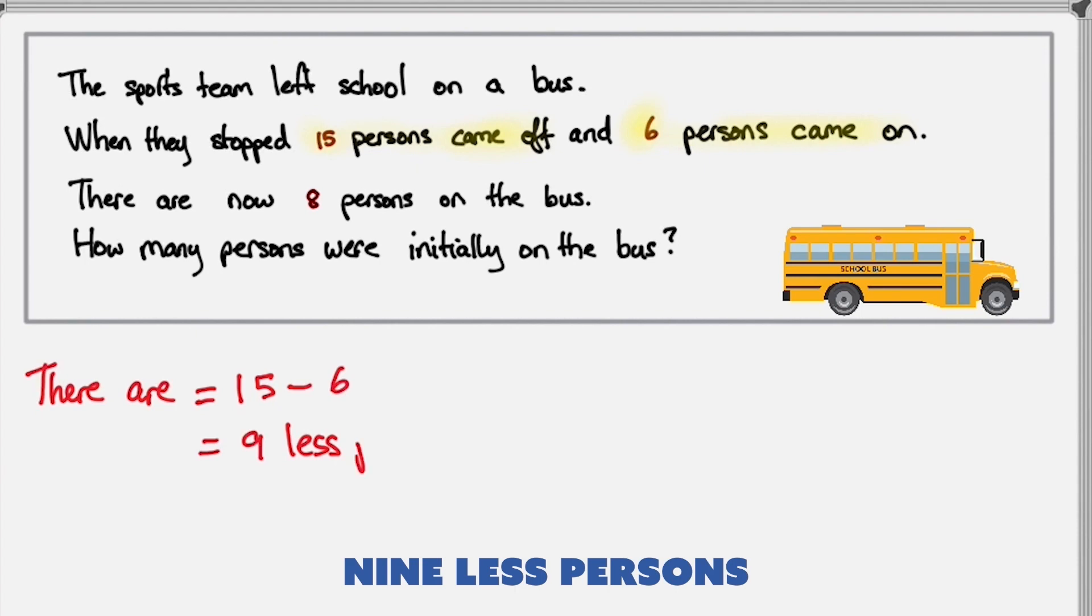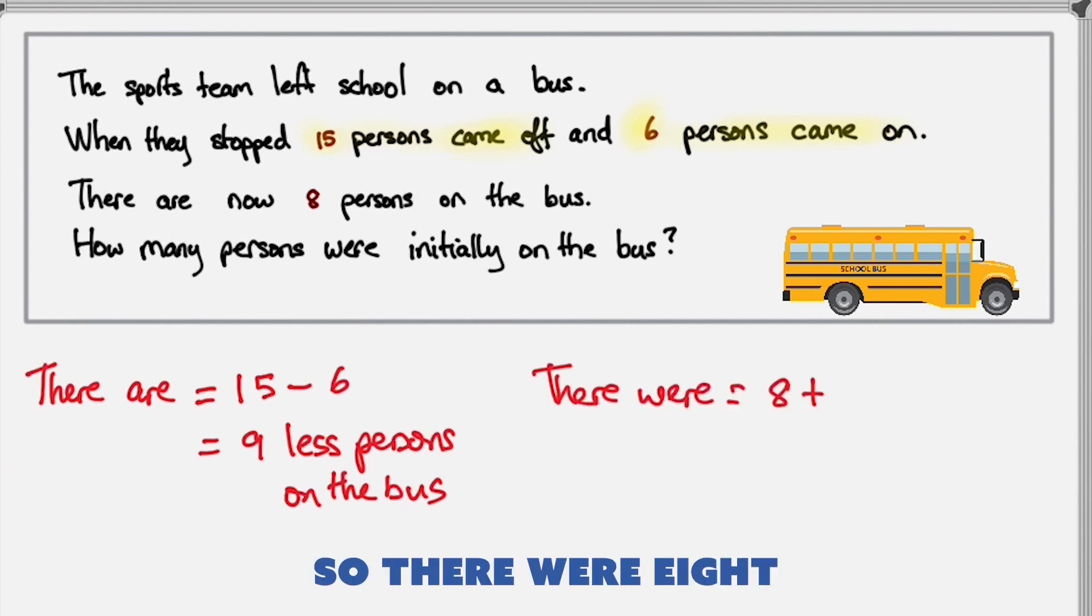And now there are 8 persons on the bus. If there are 8 persons on the bus and there are 9 less persons, then how many persons were there on the bus? So there were 8 plus the 9 that came off overall, 17 persons on the bus.